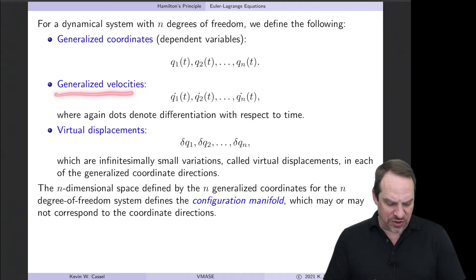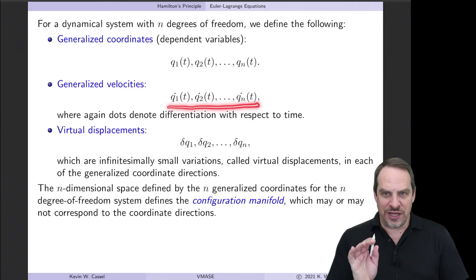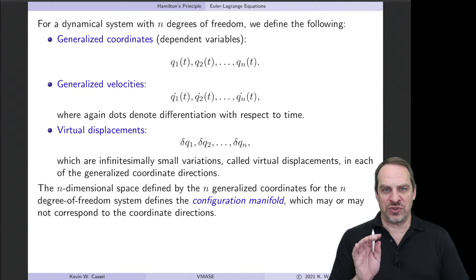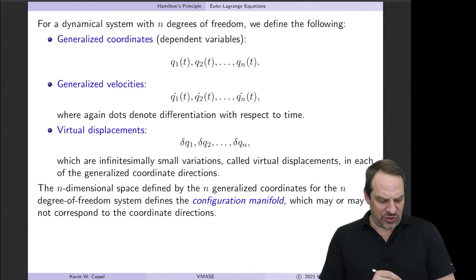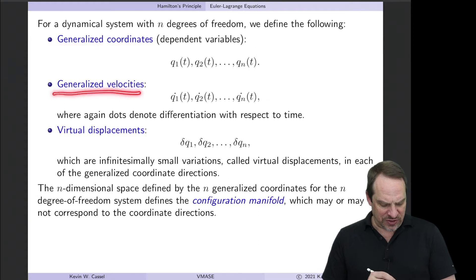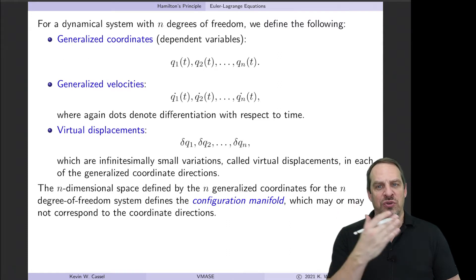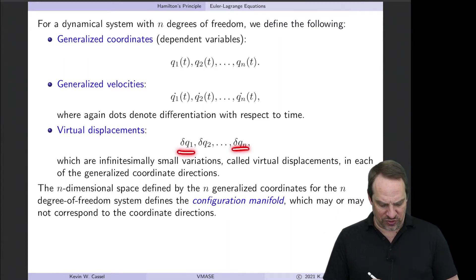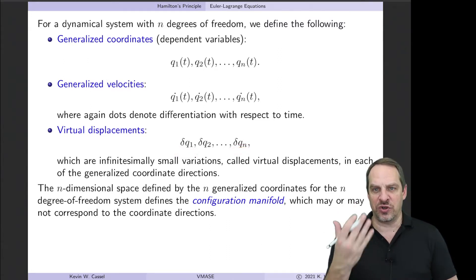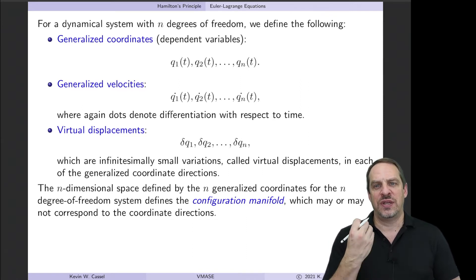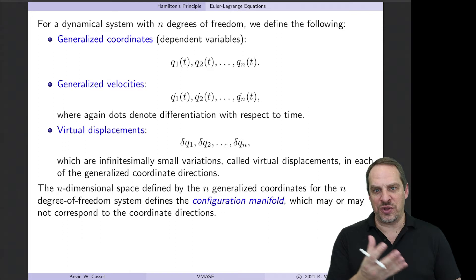Generalized velocities are simply the time derivatives of the generalized coordinates. Generalized velocities are not always actual velocities — we'll see when they are and when they aren't, so just be careful about that. In addition to generalized coordinates and generalized velocities, we have a virtual displacement corresponding to each one: delta q1 through delta qn. These are possible displacements in directions the system could go, whether it does or not.